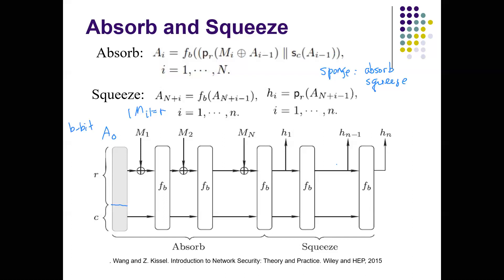After absorbing, you squeeze things out — the output of squeezing is your hash code. The squeezing phase uses the same permutation. It just takes the first R-bit prefix of each output. You do this for a number of times to get H_N. Now let's see how we can construct the permutation F_B.